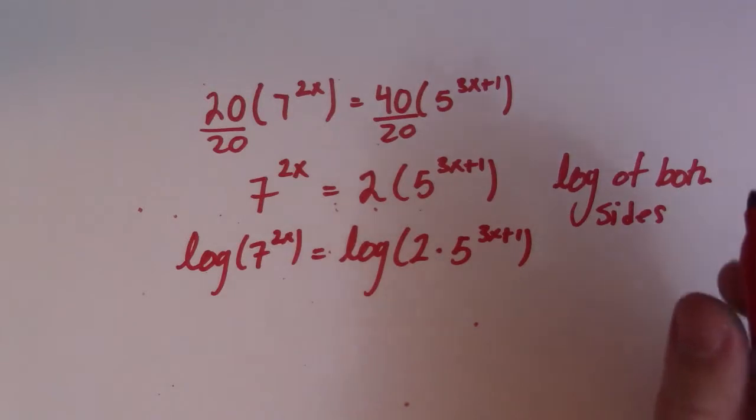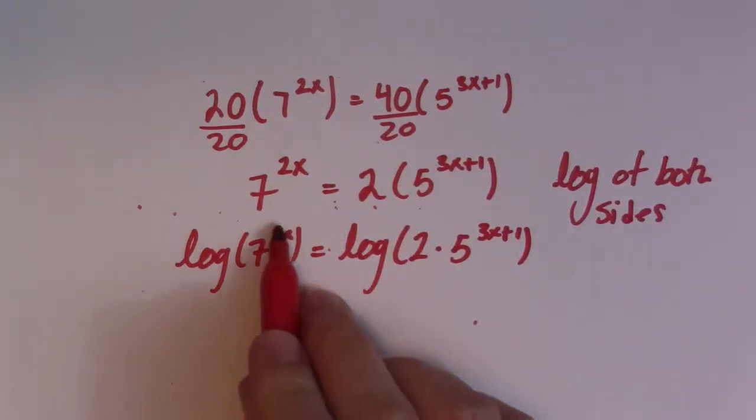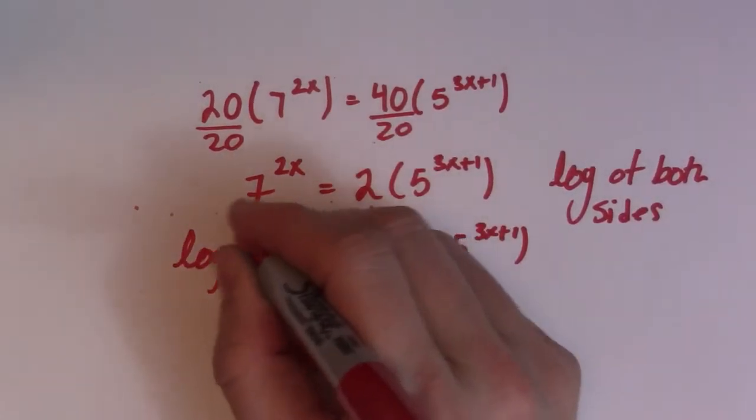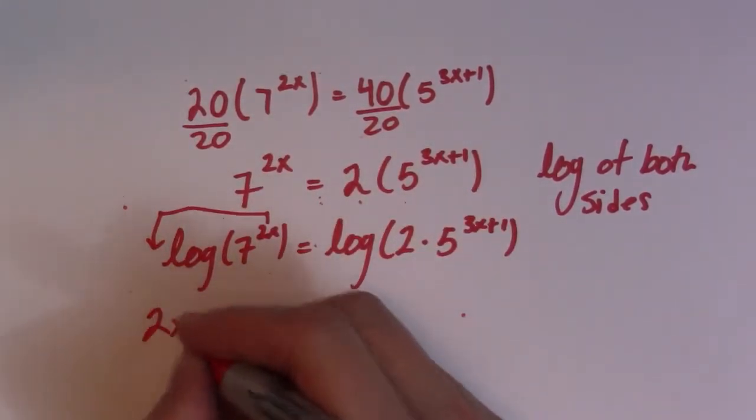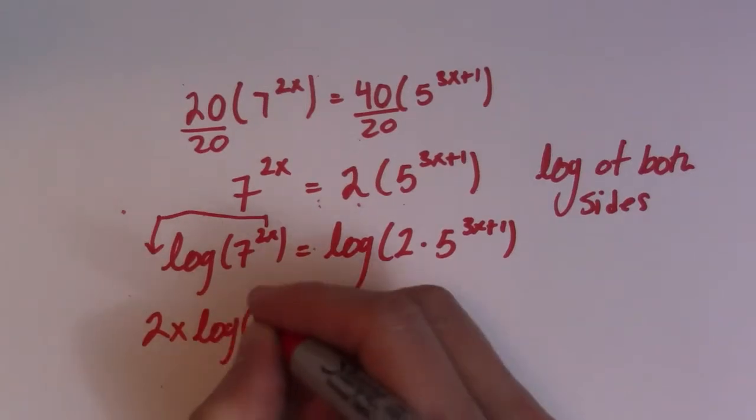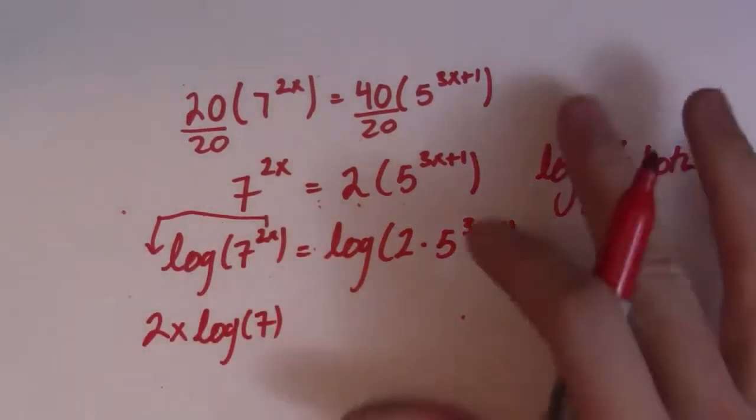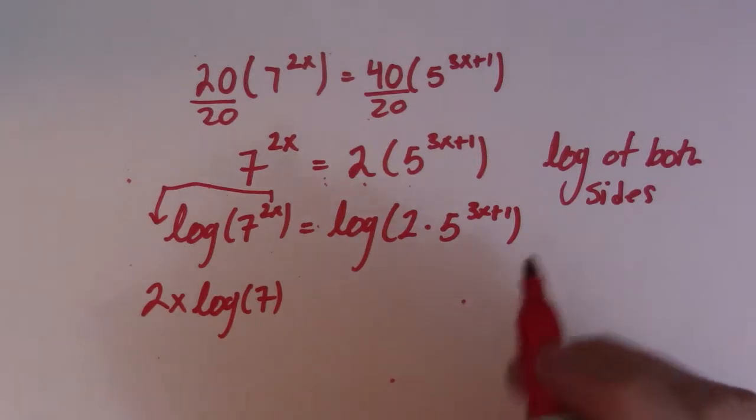So now I have to use some rules of logs. So right here, I have an exponent, so that can come out and go right in front of that guy. So I have 2x log of 7. So that's one of my log rules. So if I have an exponent inside a log function, you can take it in and put it in front.